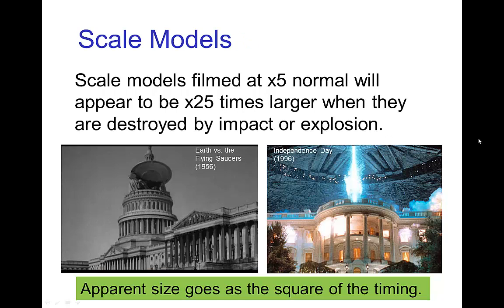This effect has been used for a long time in films. It allows you to use a scale model, film it with a high speed camera, and then when you play it back at normal speed, the scale makes everything appear much larger. For example, if you film a scale model at five times normal speed and play it back at normal speed, everything appears 25 times larger. This was used in many films.